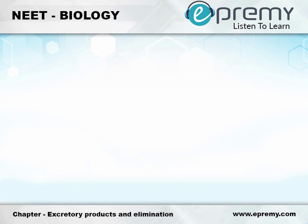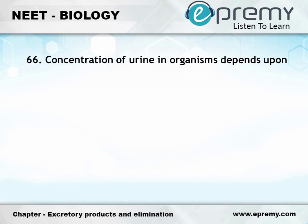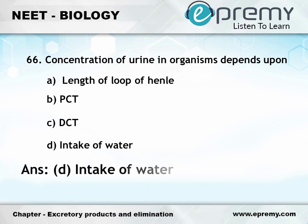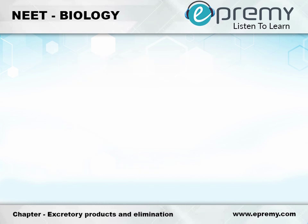Question number 66: Concentration of urine in an organism depends upon — Option A: Length of loop of Henle, Option B: PCT, Option C: DCT, Option D: Intake of water. The answer is Option D: Intake of water.